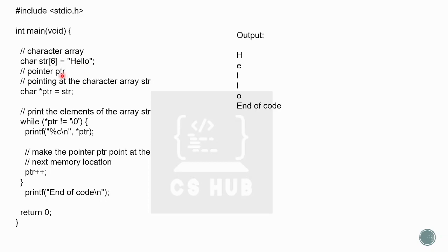We are going to declare a pointer for character strings. char *ptr = str. This pointer is used to access the string elements. We traverse all elements while the pointer ptr is not equal to the null character. If we have the string 'hello', each character H, E, L, L, O is stored in one location, and the last location contains the null character slash-zero, which marks the end of the string.